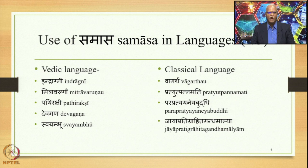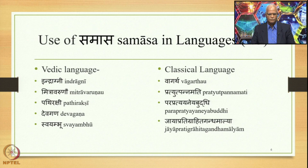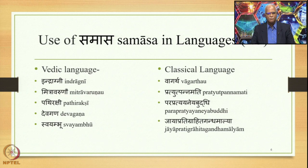Here are some examples. Vagartha is a very small-sized compound. Then the size of the compound increases: Pratyat Pannamati, then Parapratyaya Neya Buddhi, then Jaya Pratik Grahita Gandha Malya. Vagartha has two constituents; Pratyat Pannamati has about four; Parapratyaya Neya Buddhi can be said to have five; and Jaya Pratik Grahita Gandha Malya can also be said to have five. This is a peculiar feature of classical Sanskrit.